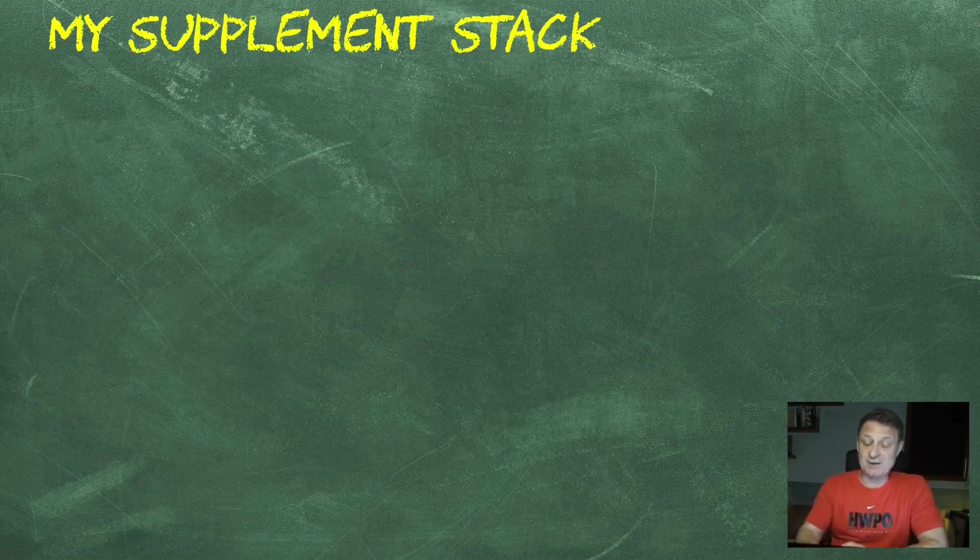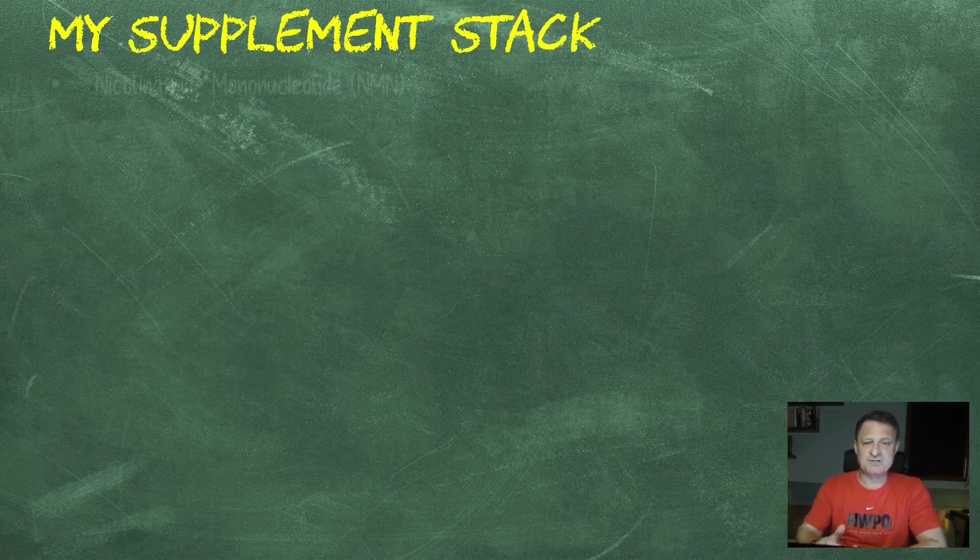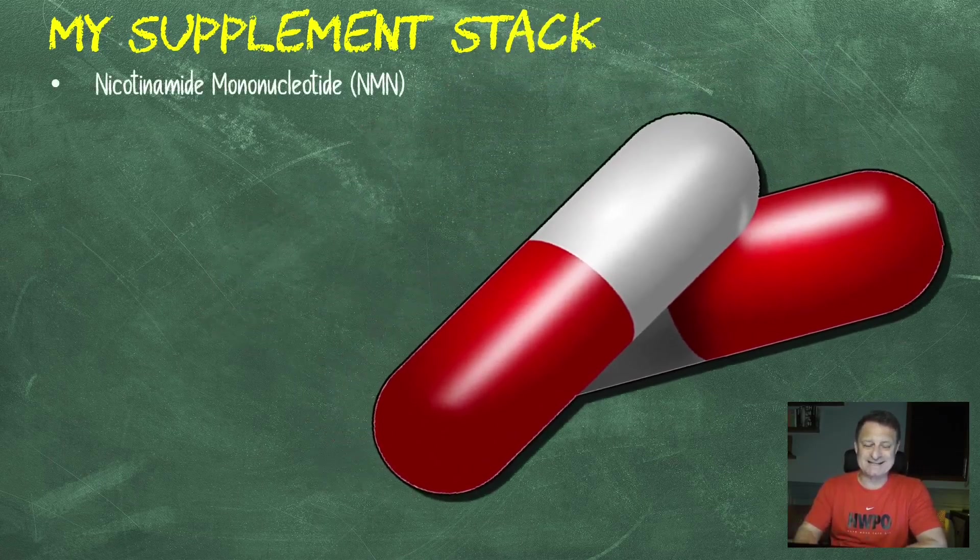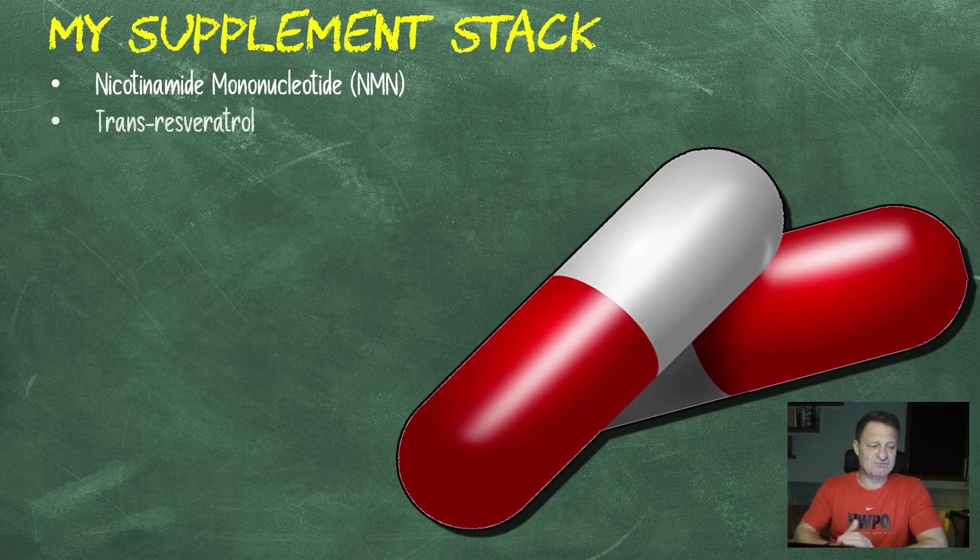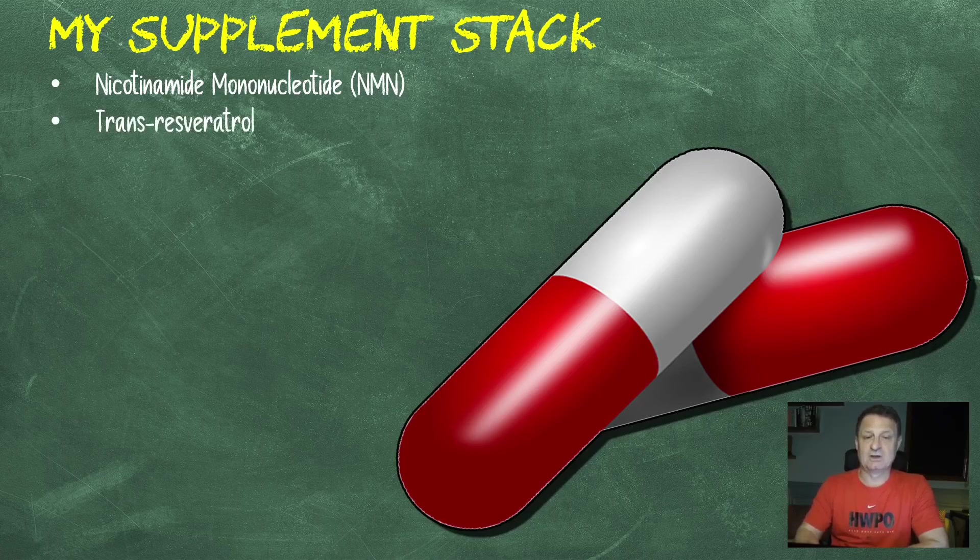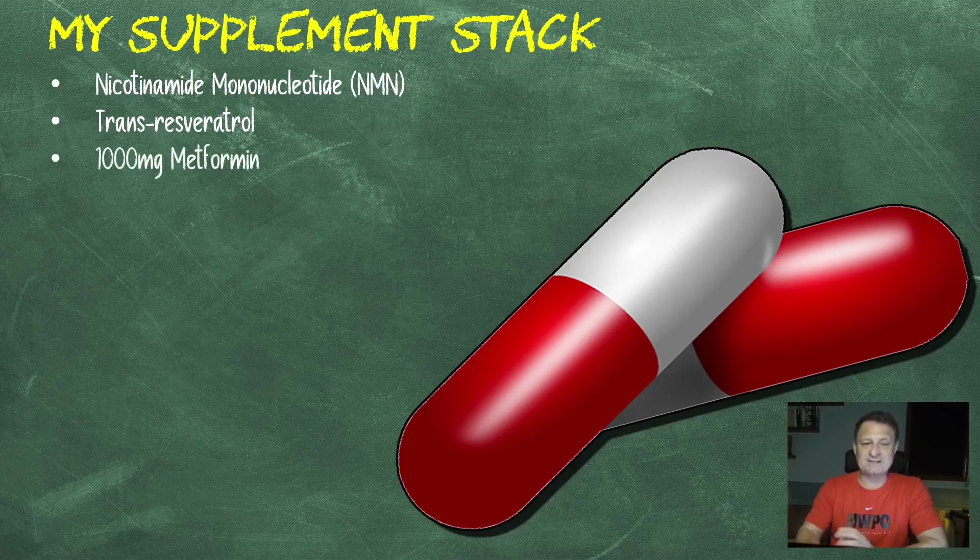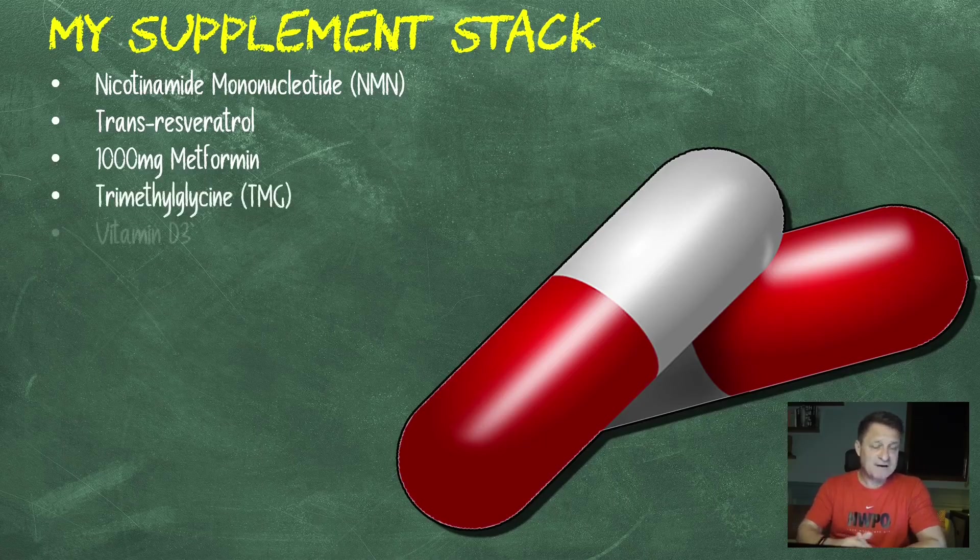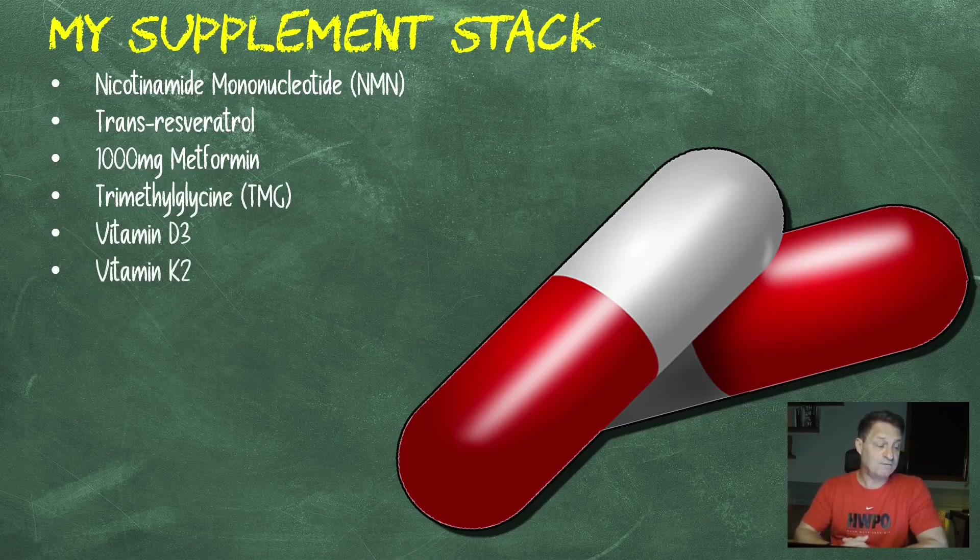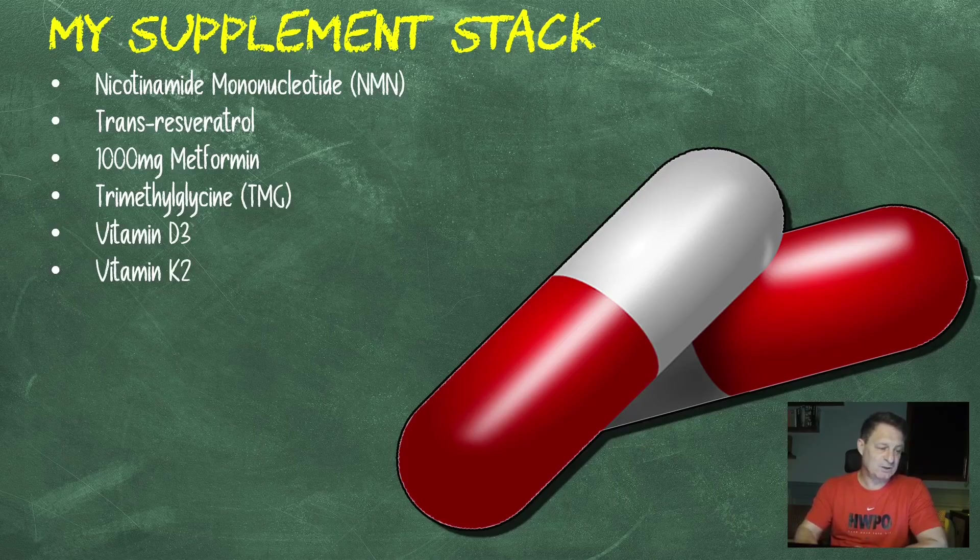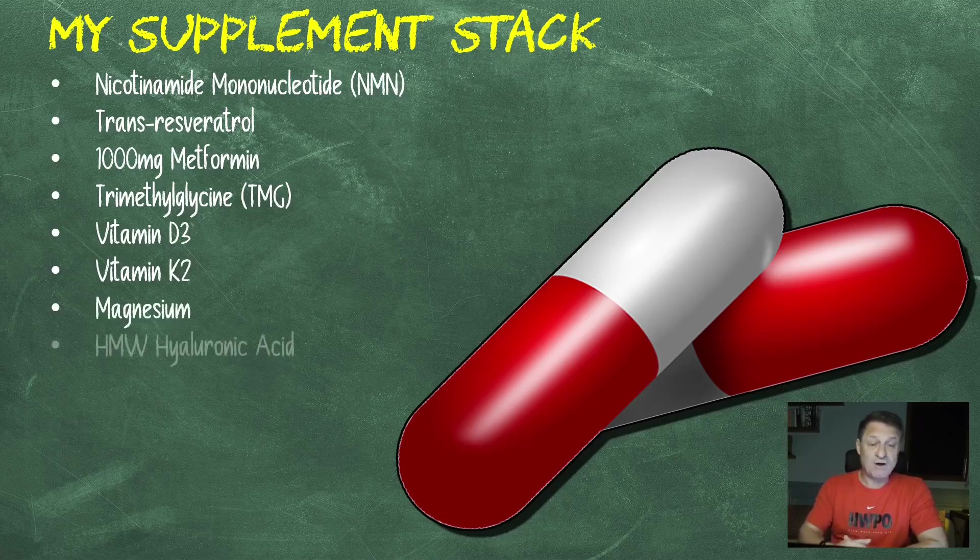Let's start by taking a look at the supplements I was taking over the last three months. First of all, we've got 1.5 grams of NMN, nicotinamide mononucleotide, one gram of trans-resveratrol. Again, only on the days I don't weight train, which is on a Tuesday, Thursday and Friday. 1,000 milligrams or one gram of metformin split into two doses. 1.5 grams of TMG, trimethylglycine, 5,000 international units of vitamin D3, 120 micrograms of vitamin K2, and that's the MK7 version. 250 milligrams of magnesium, L3 and 8 version. 400 milligrams of hyaluronic acid, high molecular weight, hyaluronic acid.